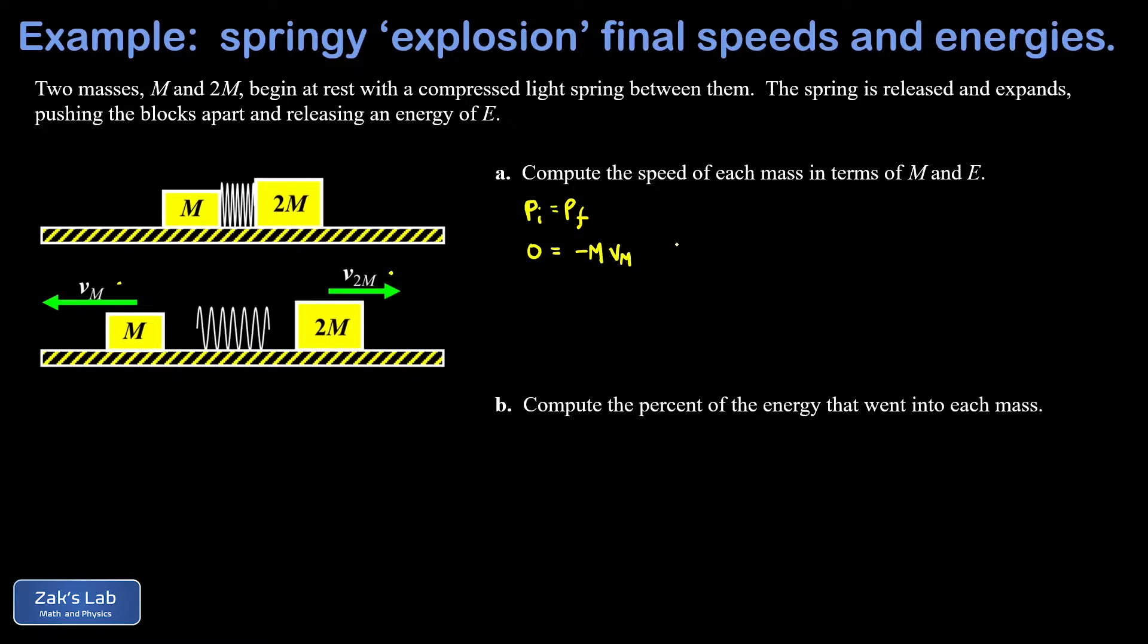Now it's also perfectly fine to start with the next step I'm going to write down: m vm is equal to 2m v2m. In other words the magnitude of the momentum to the left is equal to the magnitude of the momentum to the right. We know this must be true because the total is zero.